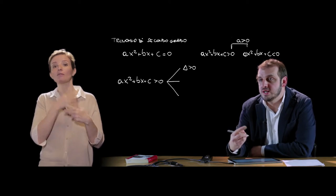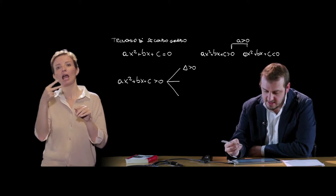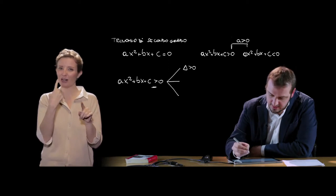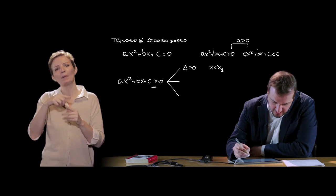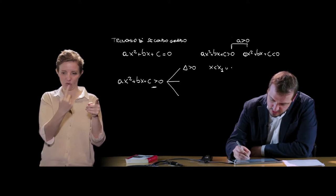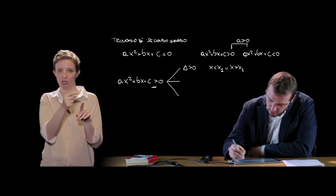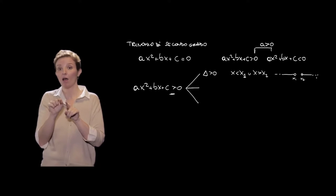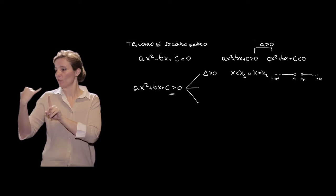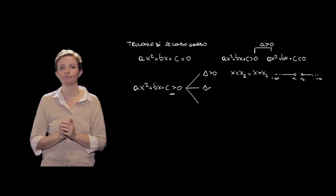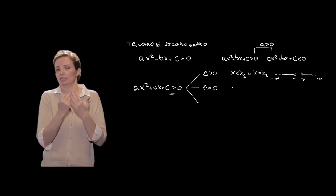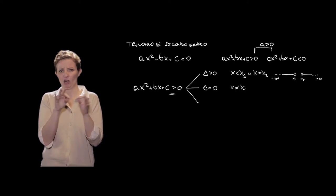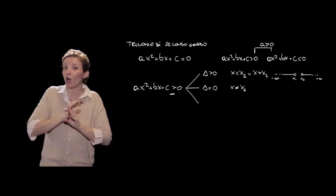Delta > 0 vuol dire che l'equazione omogenea associata avrà due soluzioni reali e distinte. La soluzione della disequazione — quando il trinomio è positivo — si ha per valori esterni all'intervallo [X1, X2], quindi X < X1 oppure X > X2. Sulla retta orientata: da meno infinito fino a X1, poi da X2 fino a più infinito. Per delta = 0, abbiamo due soluzioni reali e coincidenti, e il trinomio di secondo grado sarà sempre positivo, a eccezione del valore X1, soluzione dell'equazione.